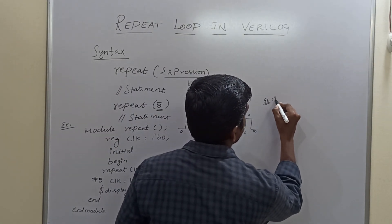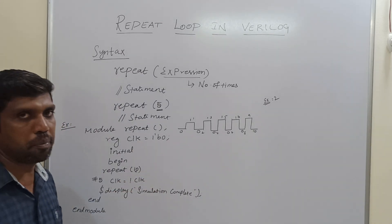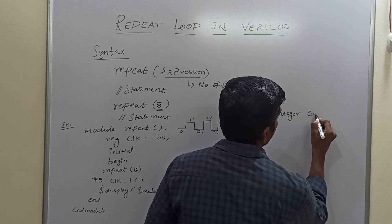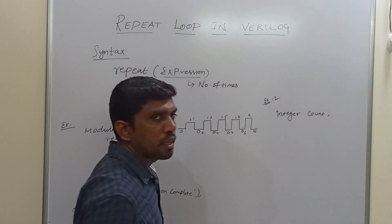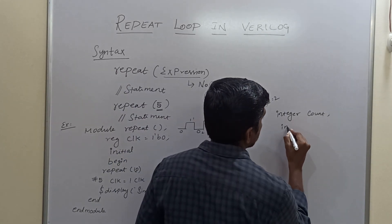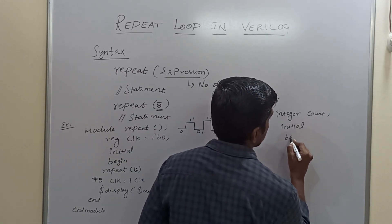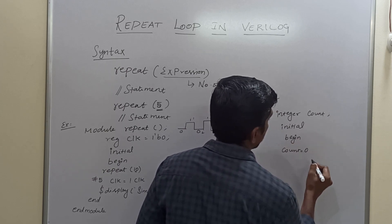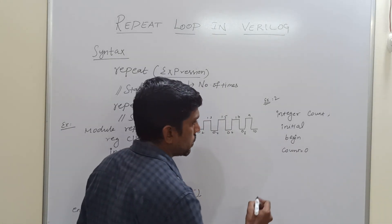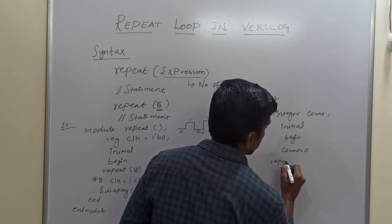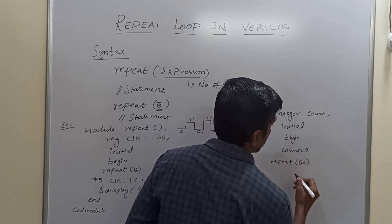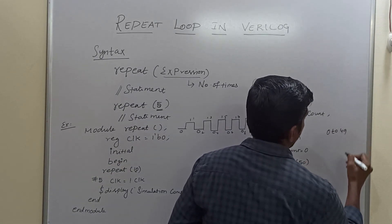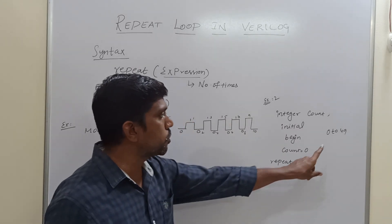Next, example 2: count the values using repeat loop. Here I use an integer value for the counter. Then initial begin, and count equal to 0 — so initially the count value is set to be 0. Then repeat (50) — here I need to count the value from 0 to 49, so the count value goes from 0 up to 49.